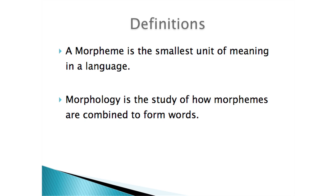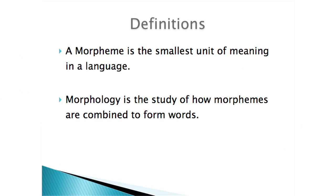Since everybody teaches reading here, you know what a phoneme is. A phoneme is the smallest unit of sound in language. So we learn that for the K sound we have the letter C or K, but there's no meaning attached to that. A morpheme has meaning attached to it — it is the smallest unit of meaning in a language. So now we're talking about prefixes, roots, and suffixes.